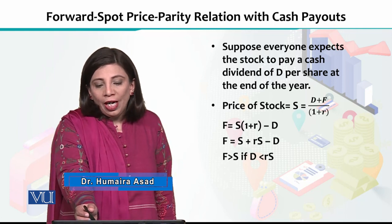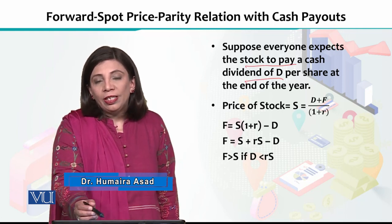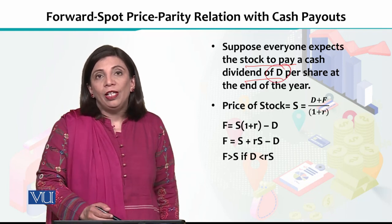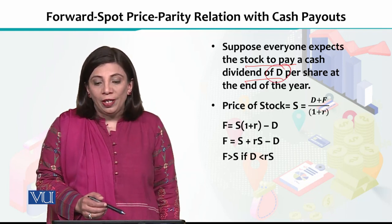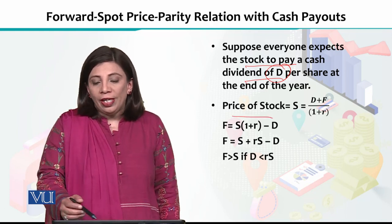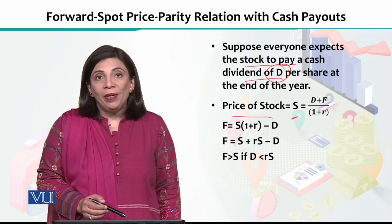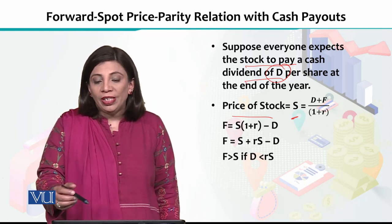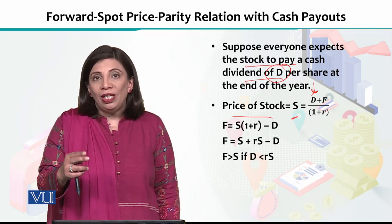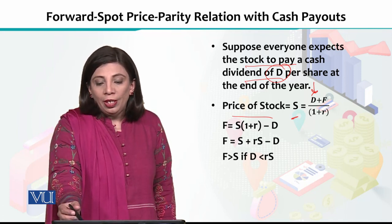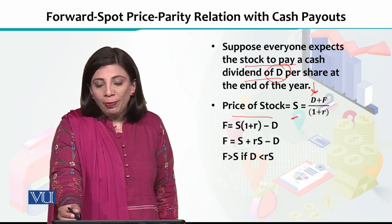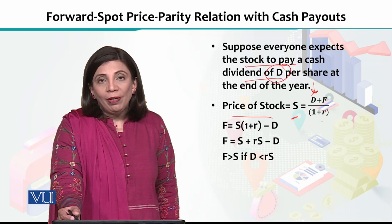Suppose you are expecting that in any stock we want to invest, the dividend of the value is D, capital D. The price of the stock is given by capital S — the current spot price. For parity, it should be equal to D, the dividend, plus the future value — the future price of that particular stock divided by 1 plus R.